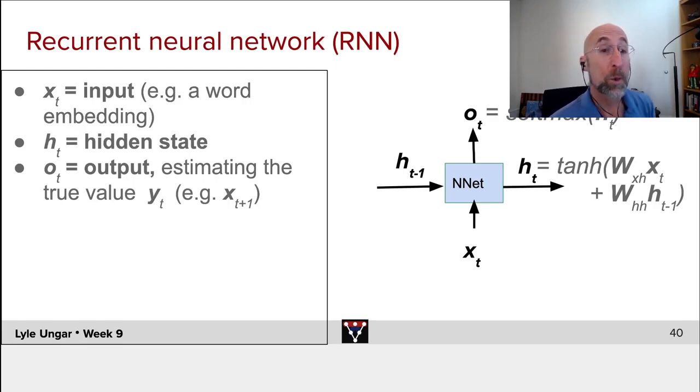The core idea is we will take at each time step an input x, for example, a word embedding. We will then feed it and the hidden state output from the preceding time, h of t minus 1. For time 0, this will have to be just all 0s, into a neural net.